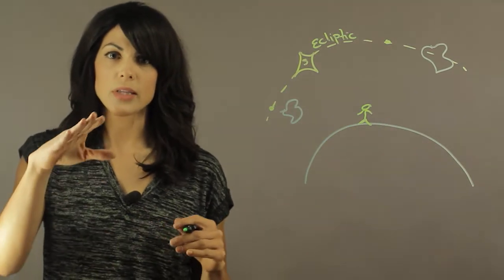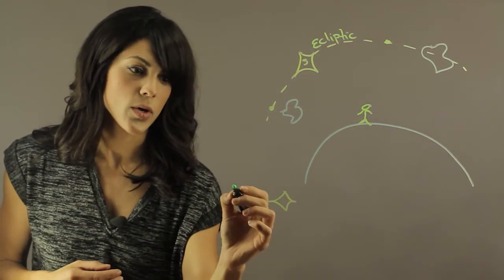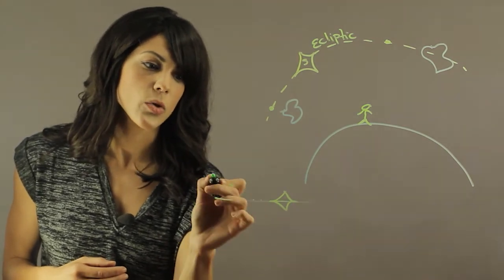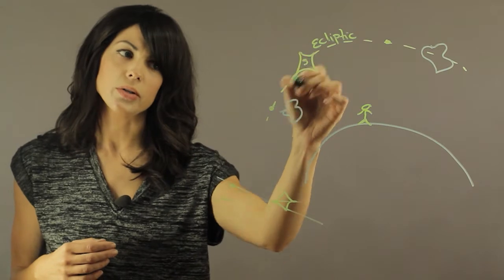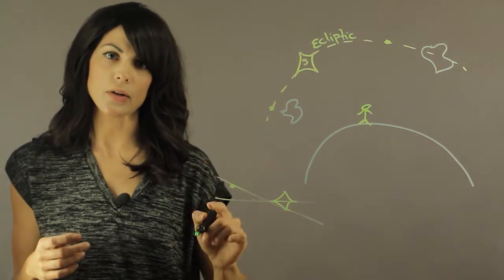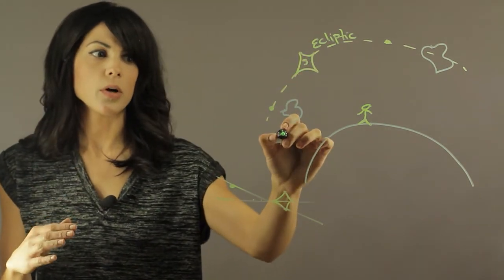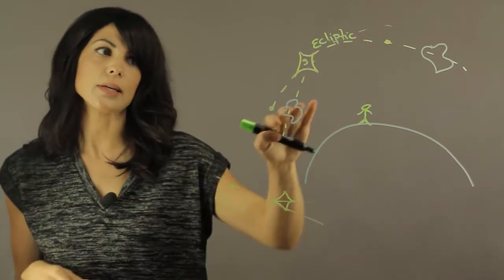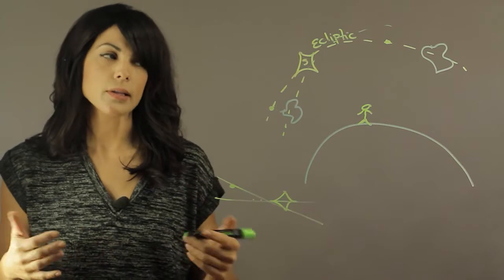Now if you have a really inclined orbit, meaning let's say you have a rock and instead of orbiting with all the planets in this plane, you have something like this, well you're not going to look like you're in the ecliptic at all. You're going to be somewhere over here, right? So depending on your inclination through the orbital plane, you're going to be inclined with the ecliptic.